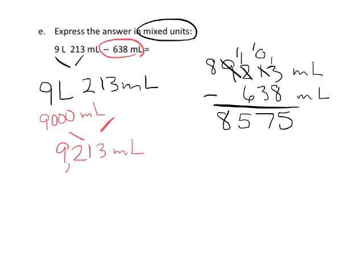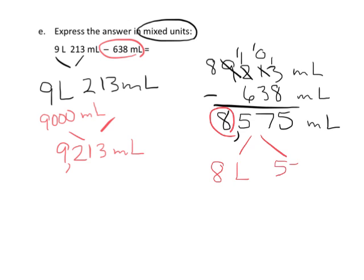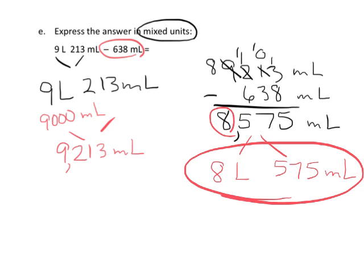We end up with eight thousand five hundred seventy-five milliliters. But remember they want us to leave the answer in mixed units, so we need to change this into liters and milliliters. Eight thousand milliliters equals eight liters, and we have five hundred seventy-five milliliters left over — that is our final answer.